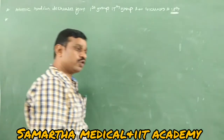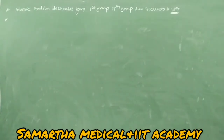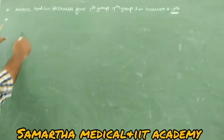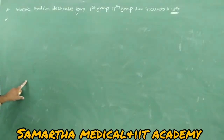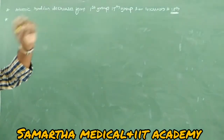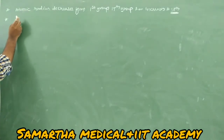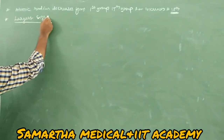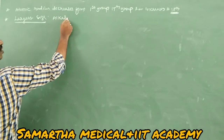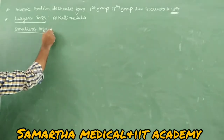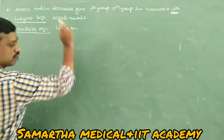In the periodic table, first group elements — alkali metals — have the largest size. Halogens have the smallest size. So alkali metals have the largest size and halogens have the smallest size in the periodic table.